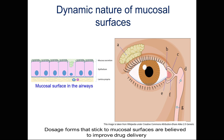Another example of a dynamic surface is the ocular tissue, and you can see this animation that shows the process of nasolacrimal drainage, when the tears are produced by the lacrimal gland and continuously irrigate the ocular surface, going into the lacrimal duct and eventually into our mouth.